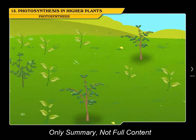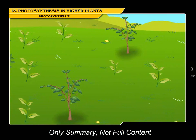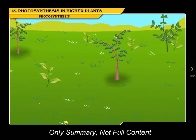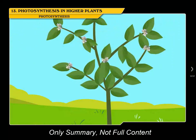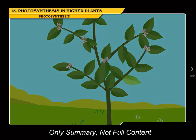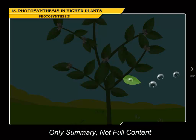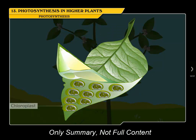Photosynthesis is the phenomenon exhibited by green plants to synthesize their own food. Leaves are the main sites of photosynthesis. Leaves comprise cell organelles called chloroplasts, which are responsible for photosynthesis and are found mainly in the mesophyll cells.